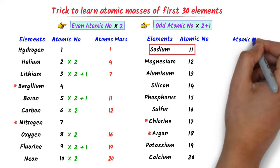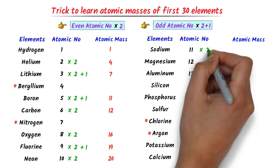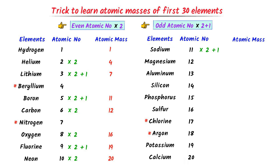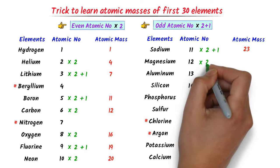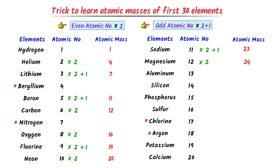The atomic number of sodium is 11. I write 11 × 2 + 1. I get 23. The atomic number of magnesium is 12. I write 12 × 2. I get 24.